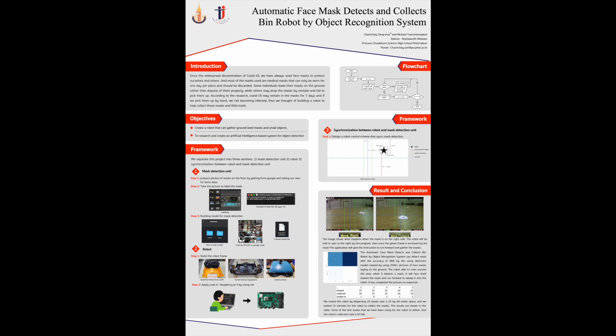For results and conclusion: the image on the left shows what happens when the mask is on the right side of the robot — the robot will be told to spin right by the program. Then, once the green line is crossed by the mask, or the red dot is on the green line, the robot will move forward to gather the mask. Our automatic face mask detect and collect bin robot, by recognition system, can detect masks with an accuracy of 95%, using a model trained on 2,000 photos of face masks laying on the ground. The robot can roam around the area, locate a mask, face itself towards it, and move towards it to sweep the mask into the robot.